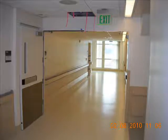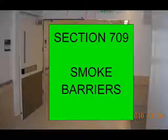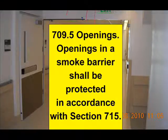Notice again — 709.5: openings in a smoke barrier shall be protected in accordance with 715. This seems to be confusing for folks, so all we're going to do is hit the door swings in a smoke barrier within a hospital.